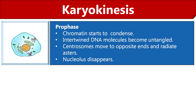Now we will discuss the stages of karyokinesis in M phase. Starting with prophase — it is the first stage of karyokinesis that occurs after the S and G2 interphase. During prophase, condensation of chromosomal material occurs, forming compact mitotic chromosomes. These chromosomes contain two chromatids combined together at the centromere. The intertwined DNA molecules formed during interphase become untangled during prophase. Centrosomes, after duplication during interphase, move towards the opposite poles of the cell, where they radiate asters and spindle fibers. During this stage, the nucleolus completely disappears and the nuclear membrane begins to degenerate.